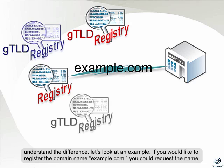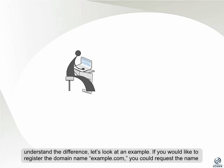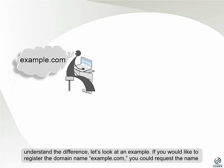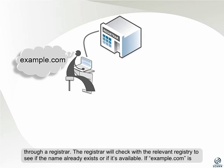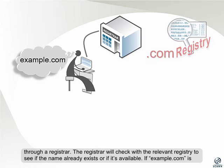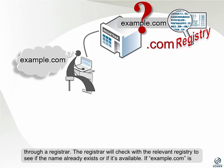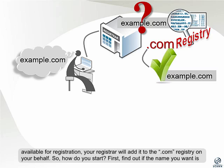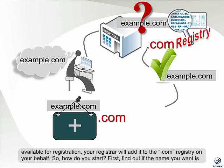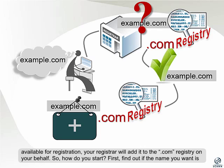To understand the difference, let's look at an example. If you'd like to register the domain name example.com, you could request the name through a registrar. The registrar will check with a relevant registry to see if the name already exists or if it's available. If example.com is available for registration, your registrar will add it to the .com registry on your behalf.